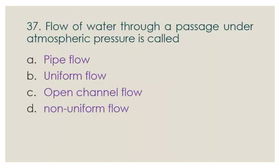Question number 37: Flow of water through a passage under atmospheric pressure is called — options: a) pipe flow, b) uniform flow, c) open channel flow, d) non-uniform flow. The correct answer is option C — open channel flow.